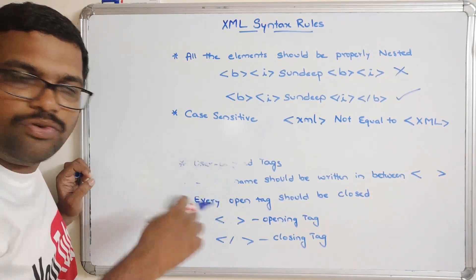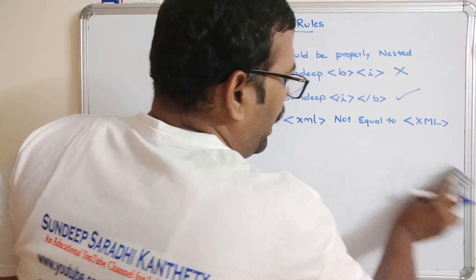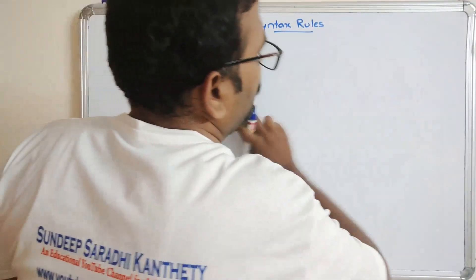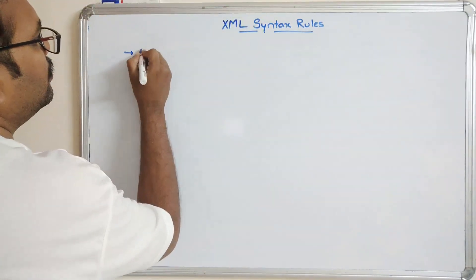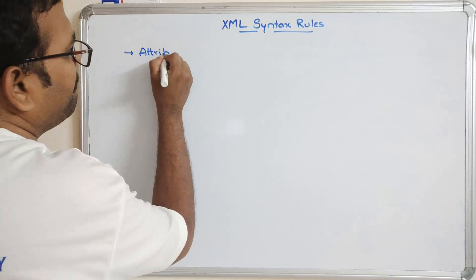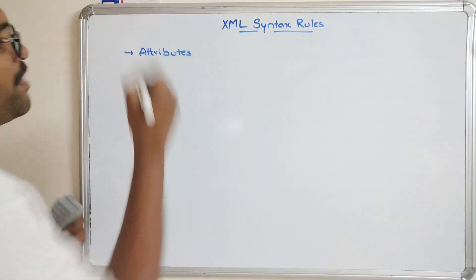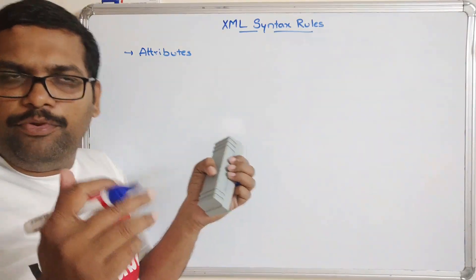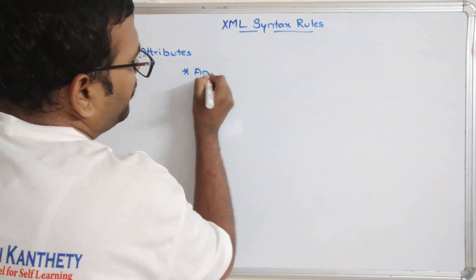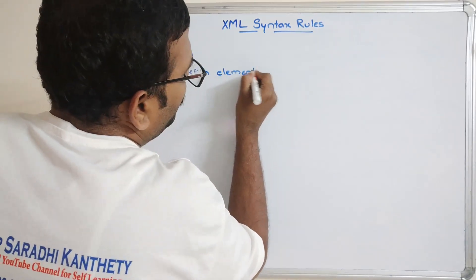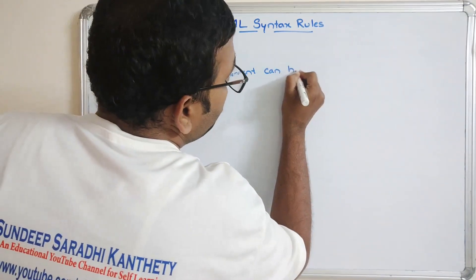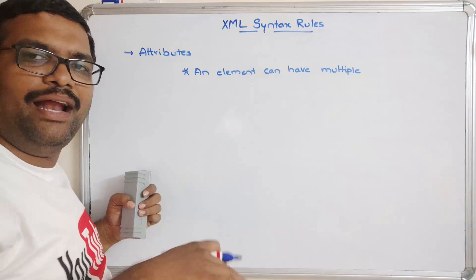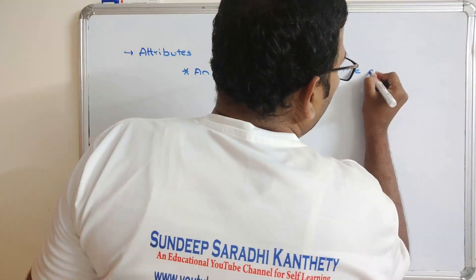These are all the rules we need to follow while writing tags and elements. The next aspect is attributes. We know that for every element there can be many attributes. An element can have multiple attributes — it is not expected to have only a single attribute.